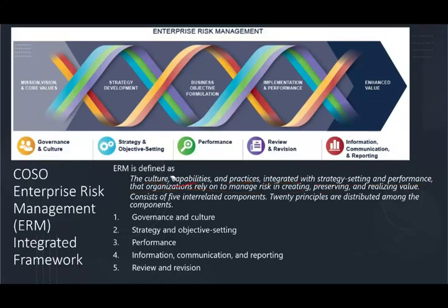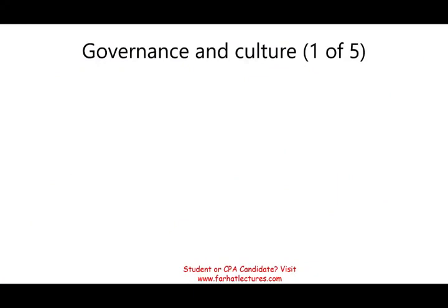Those five interrelated components contain 20 principles in total. The five components are: governance and culture; strategy and objective setting; performance; information, communication, and reporting; and review and revision. In this session, we're focusing on the first component — governance and culture — which has five principles: board oversight, operating structure, culture, core values, and attract, develop, and retain staff.